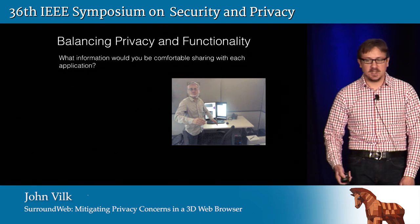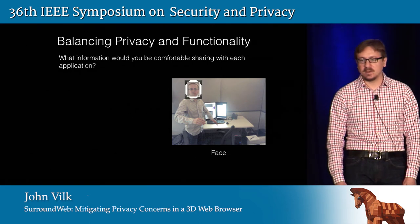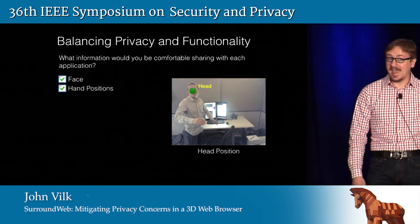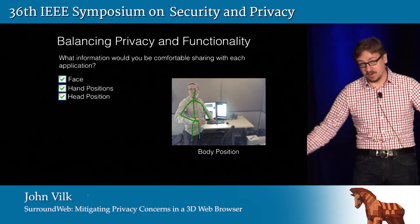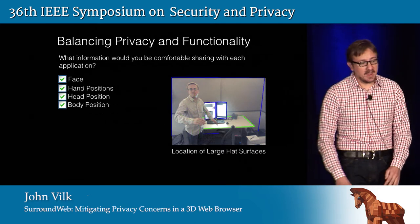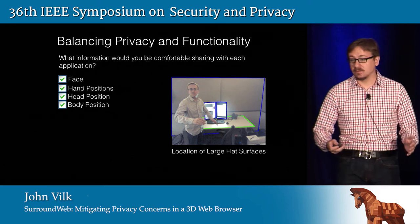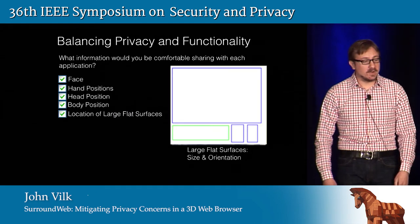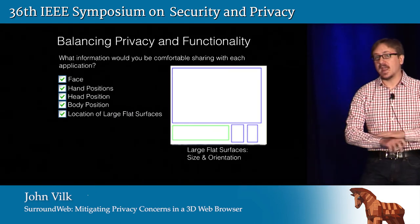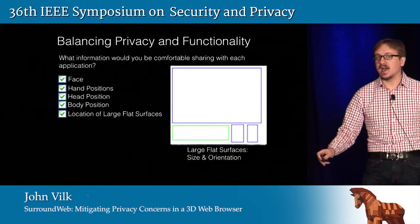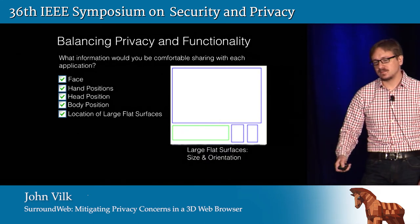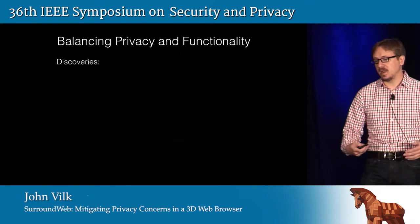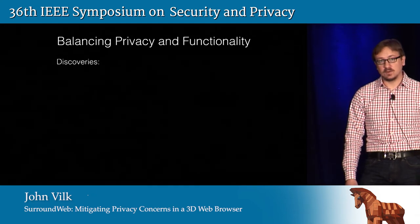The list of information included: the face with no location information attached, the position of the left and right hand, the position of the head, the entire body's position, the location of all large flat surfaces in the room — highlighted in blue and green — and finally those same large flat surfaces without any location information whatsoever, just their size and orientation. From this survey and a second survey described further in the paper, we made two important discoveries.